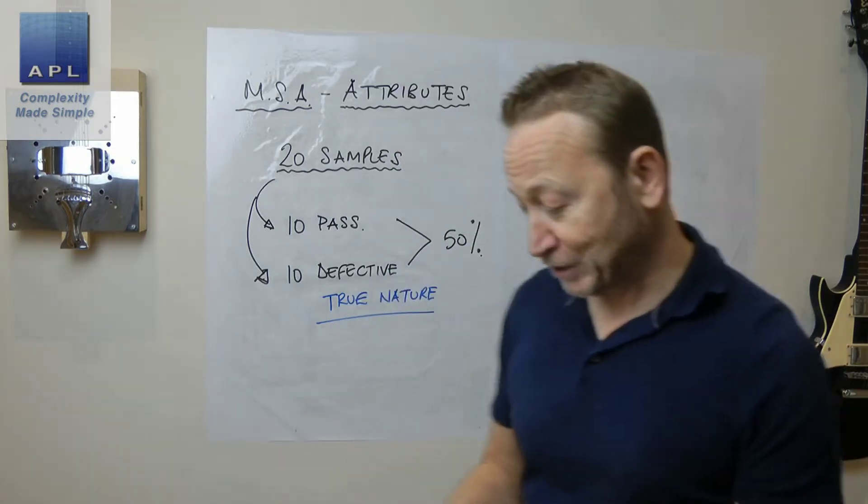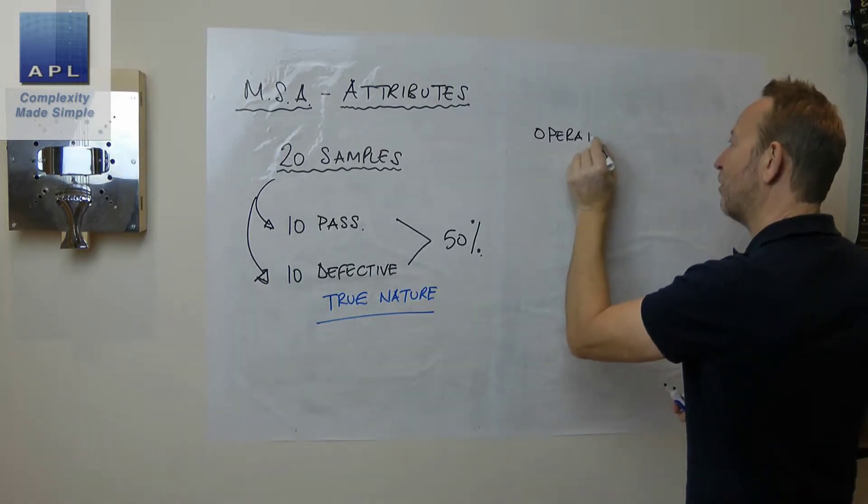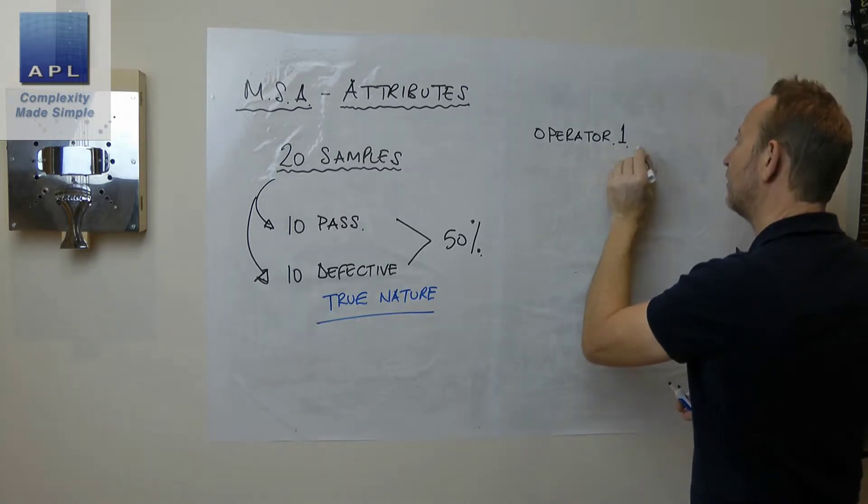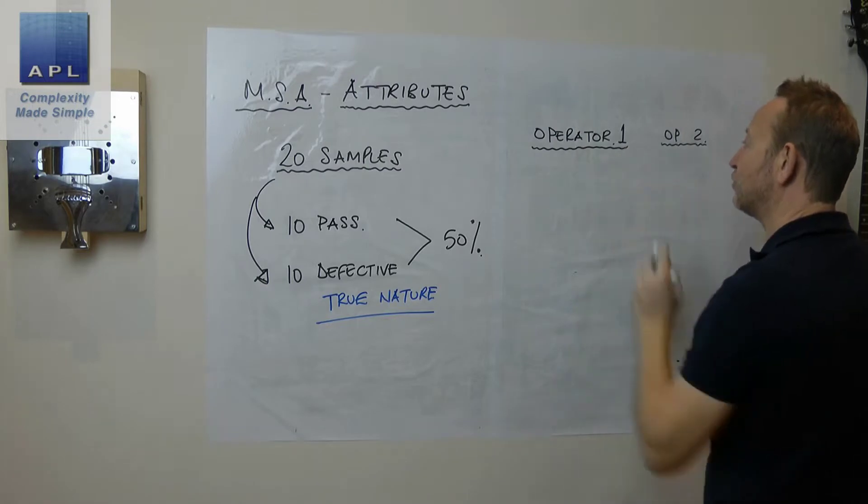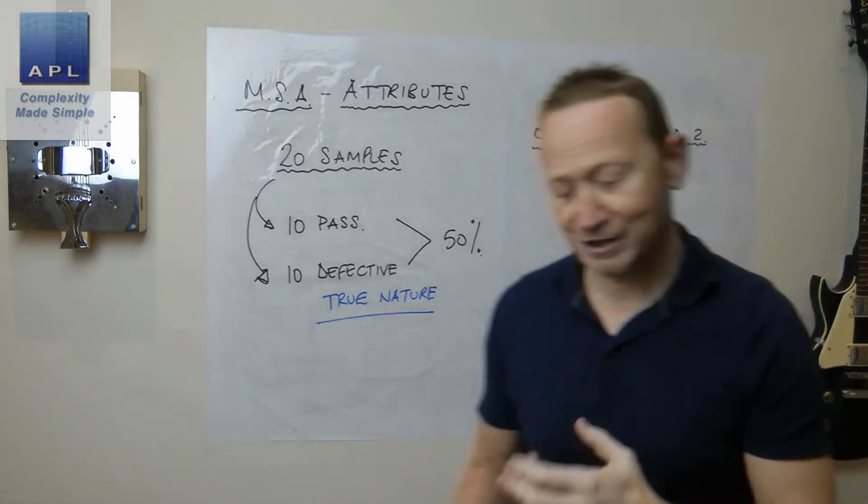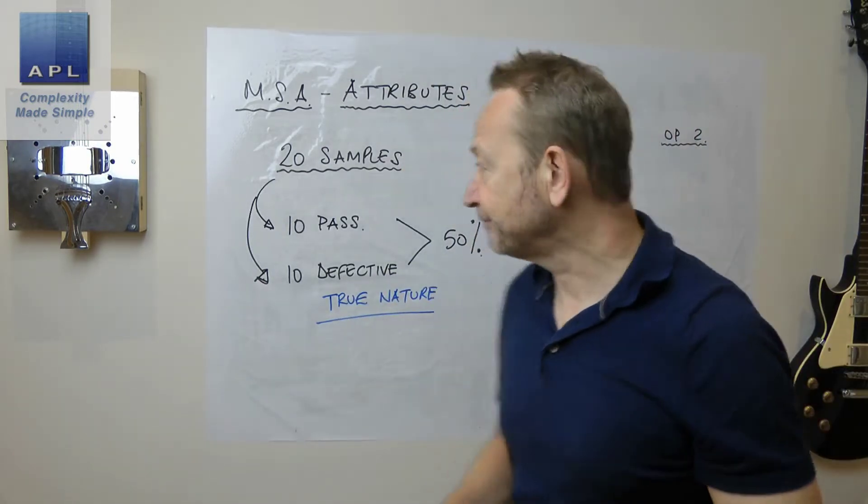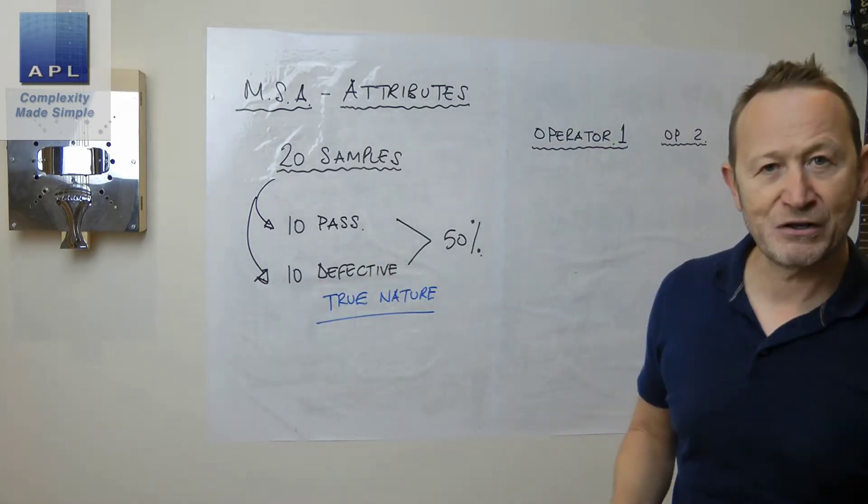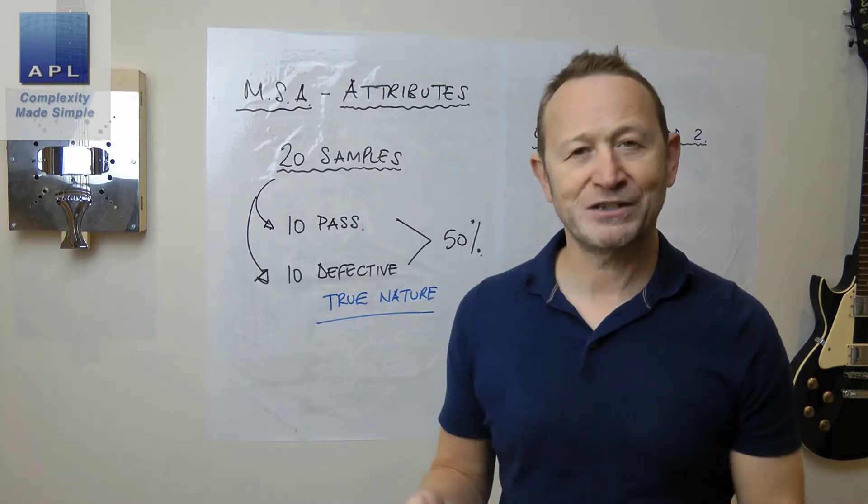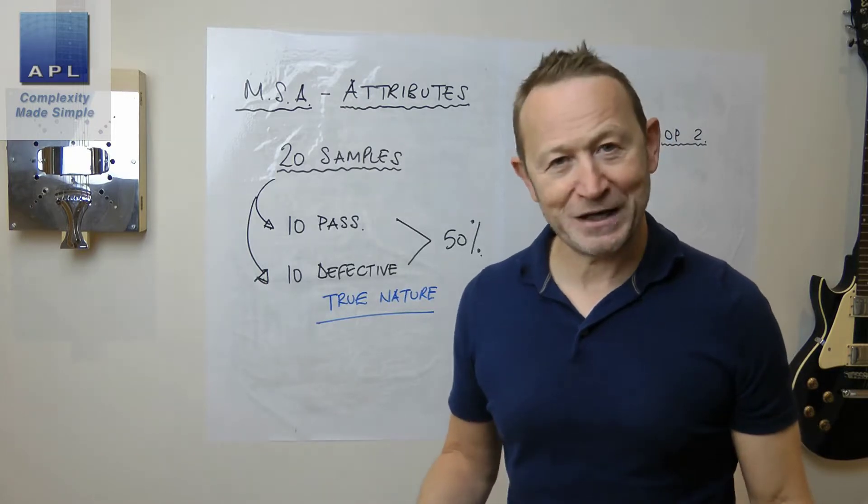And then you're probably going to pick an operator, because often these things are people. Operator one, operator two could be an inspection machine, by the way. There's lots of inspection cameras and things. So this could be a camera if it's an automatic inspection process. And then what you're going to do is you're going to offer up the 20 parts and you're going to give them a little 20 question exam, almost, and you're going to see how many they get right.